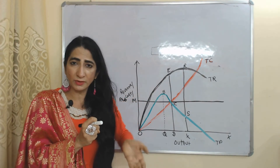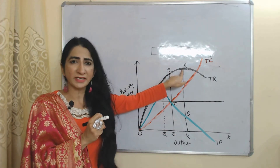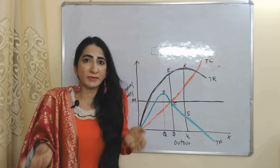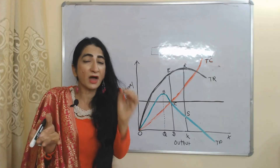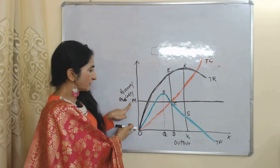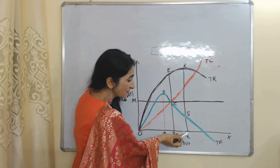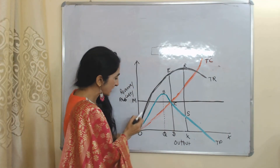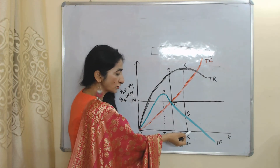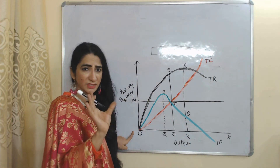According to this model, we want to get maximum revenue. At OK amount of output our revenue is maximum, so why are we not producing OK? According to this model, we want to maximize revenue but without doing any compromise with minimum profit. Our minimum profit is OM, but at OK amount of output we are receiving SK amount of profit, and SK is less than OM. That is why we cannot produce OK.